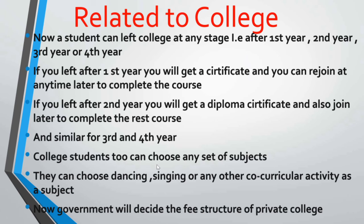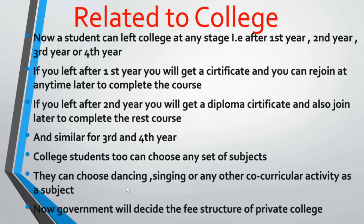College students can also choose any set of subjects — they are not bound to a fixed set. They can choose dancing, singing, or other co-curricular activities as a subject; for example, you can choose dancing as a subject in your degree. Most importantly, the government will now decide the fee structure of private colleges — private colleges cannot decide their own fee structure.